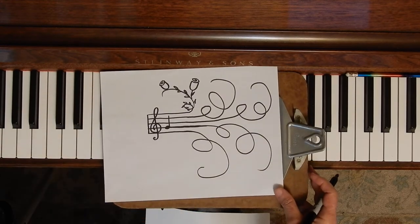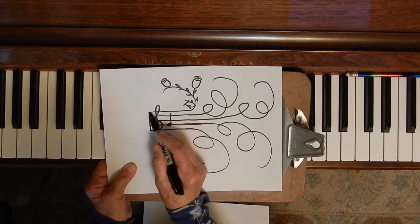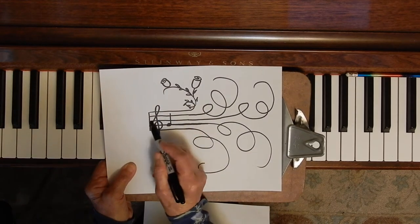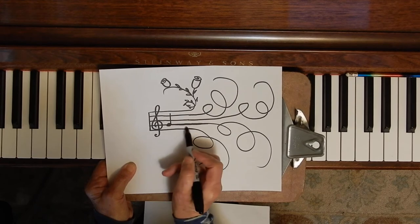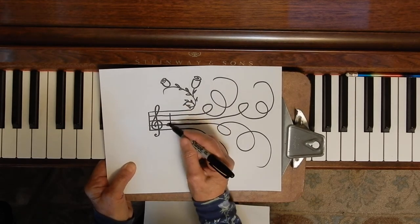And the last one is this one here, where I took the staff. So I had to draw five lines. One, two, three, four, five. Right? And I had to draw my treble clef on there. And I drew the note G.